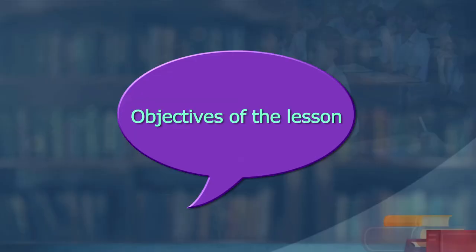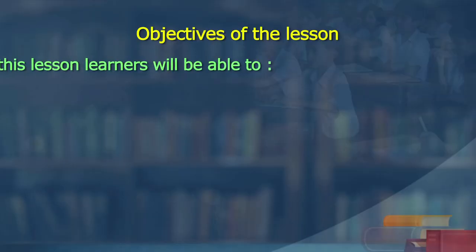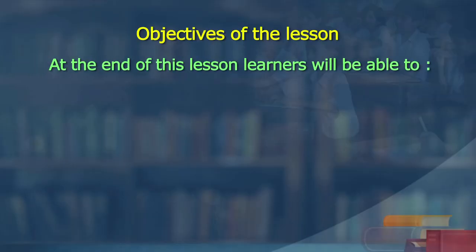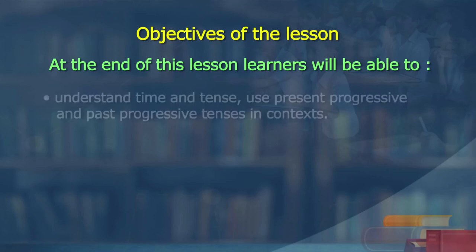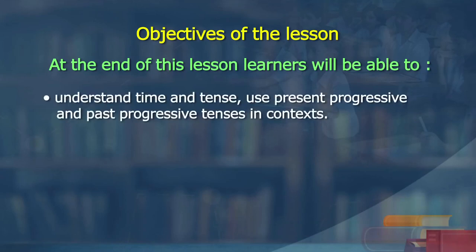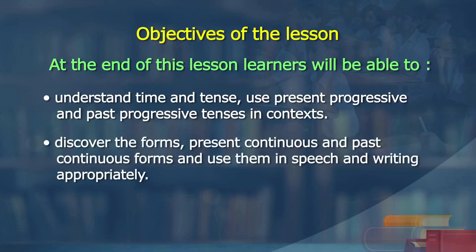Let us read the objectives of this lesson — what are we expecting learners to do at the end of this lesson? At the end of this lesson, the learners will be able to understand time and tense, use present progressive and past progressive tense in context, discover the forms — present continuous and past continuous — and use them in speech and writing appropriately.